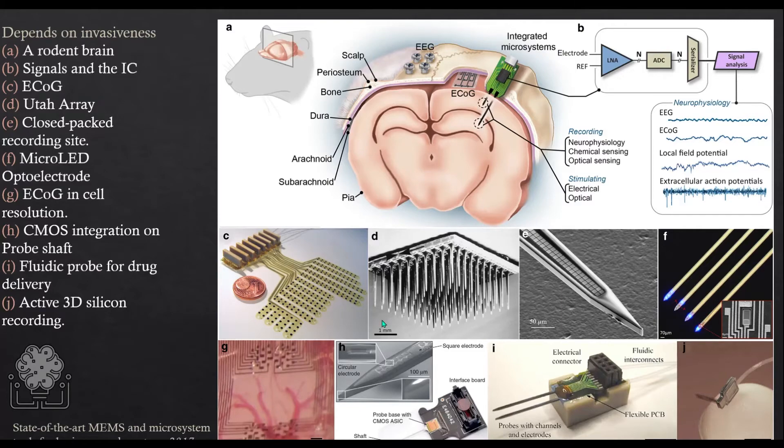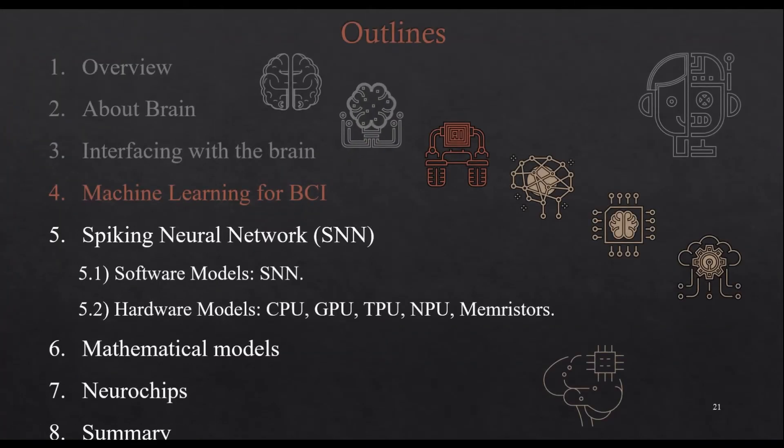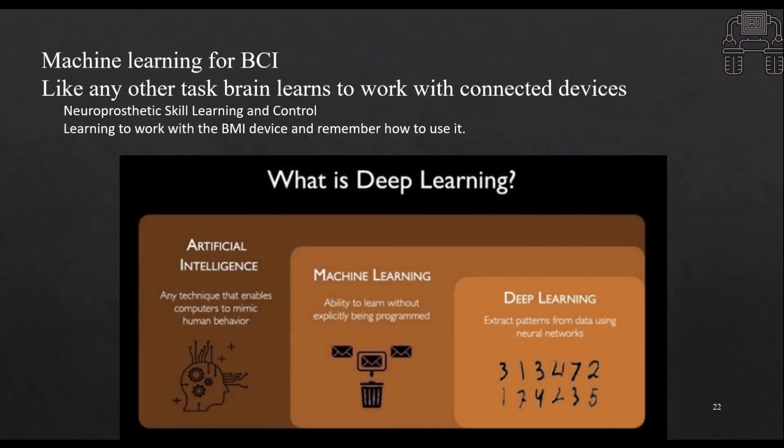That's the interfacing. Let's check out the machine learning for BCI. Basically what we want to do for machine learning is train the models that learn how the brain is working. And after that we apply this on other devices and then our brain learns how those devices work. It's a very interesting relation.